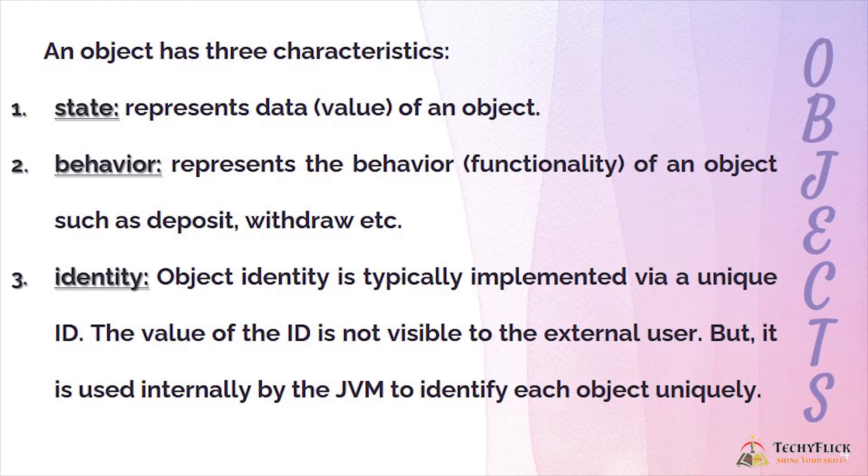An object has three characteristics: state, behavior, identity. State represents data of an object. Behavior represents the functionality of an object such as deposit, withdraw, etc.